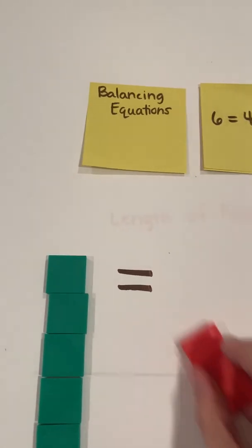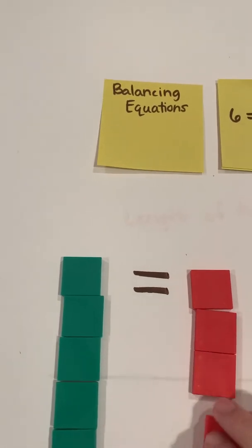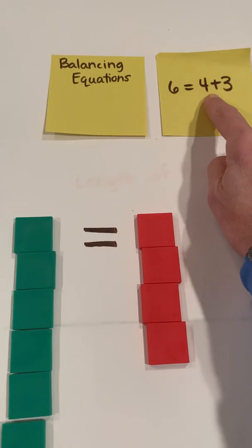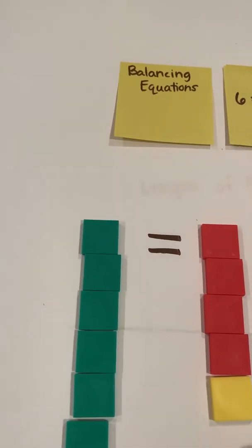And then I'm going to add 4 plus 3. I'm going to start with 4 here. If some students are struggling, having something of the same color really helps them see the two addends here, 4 and a 3. So there's my 4, and I can add my 3 more.